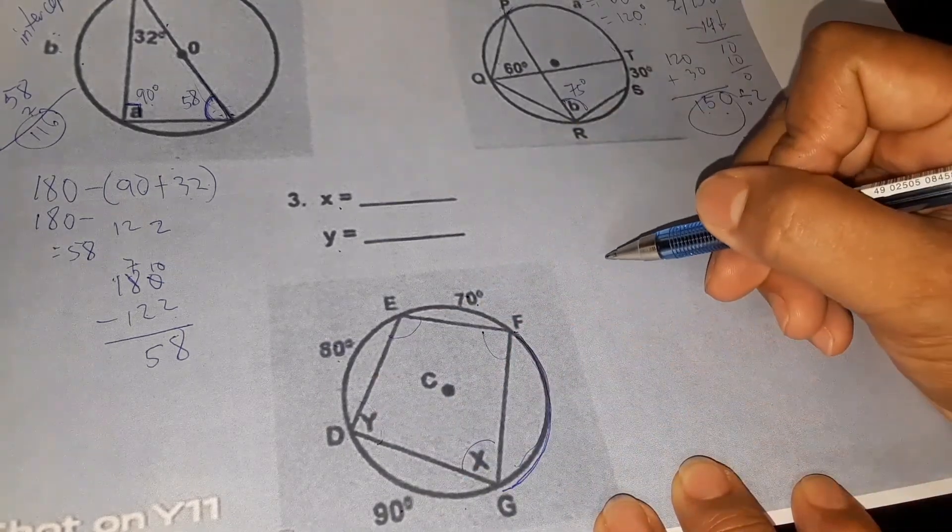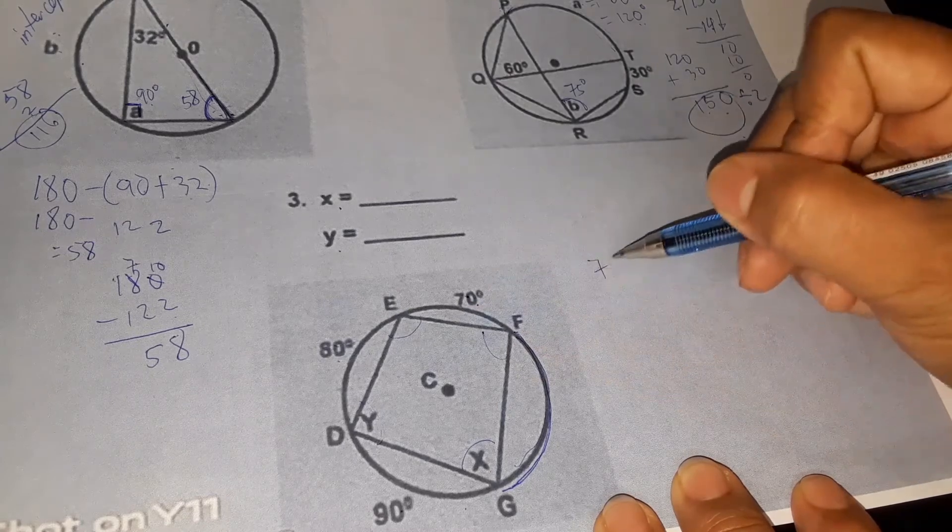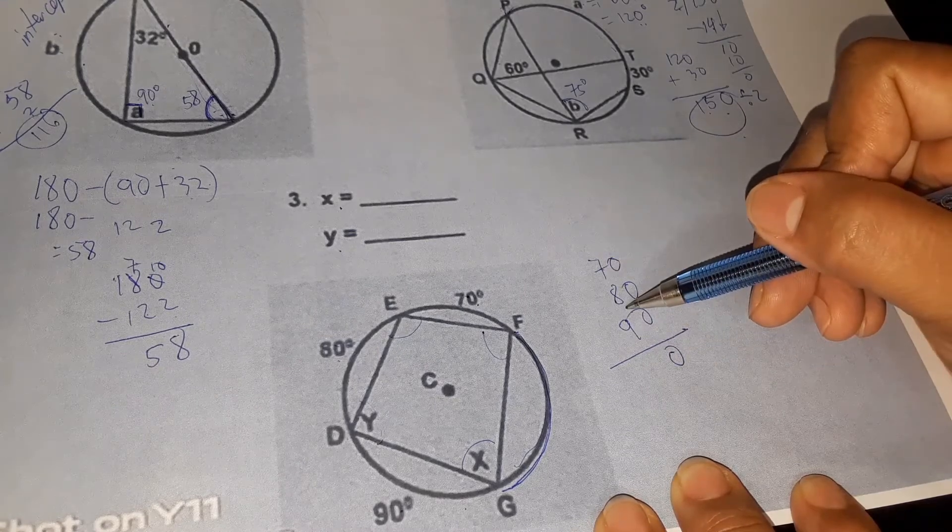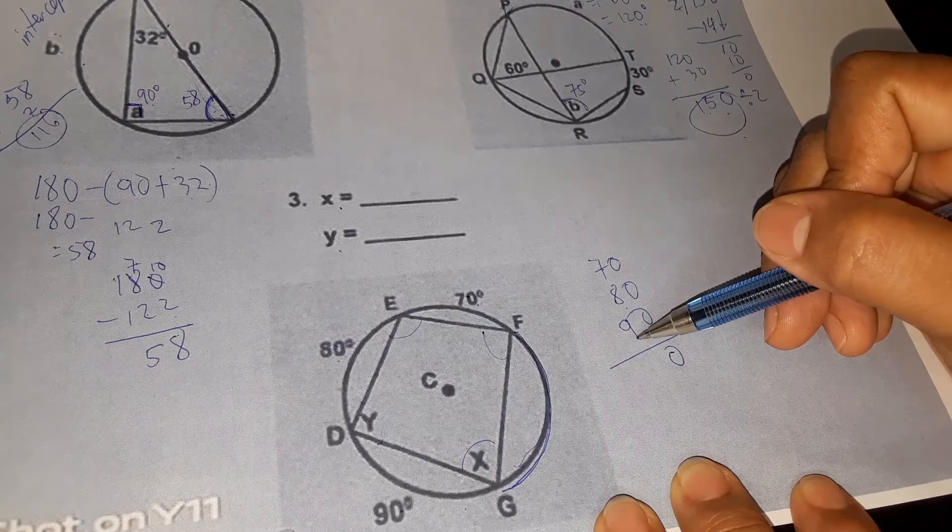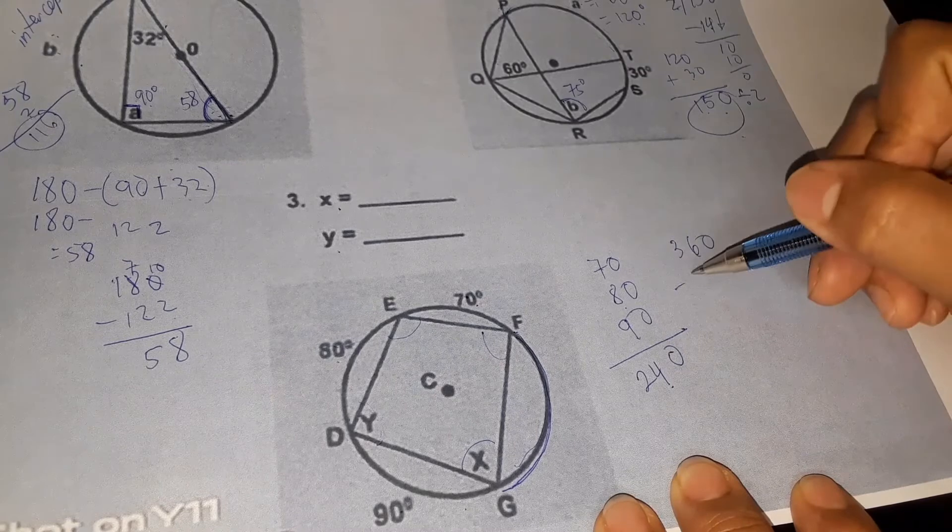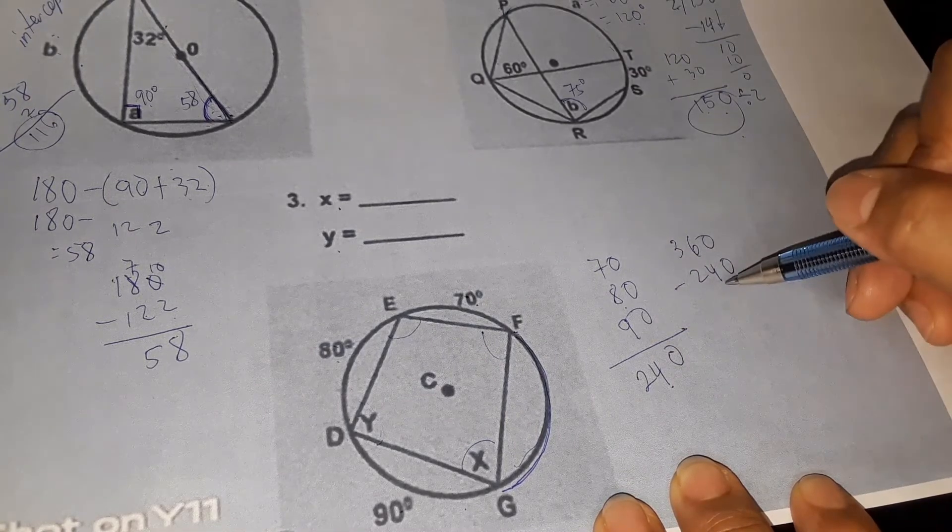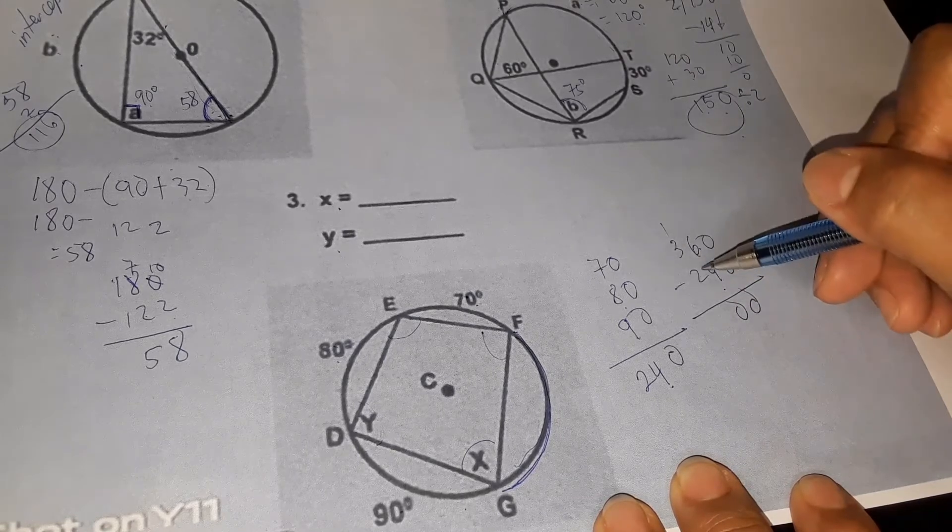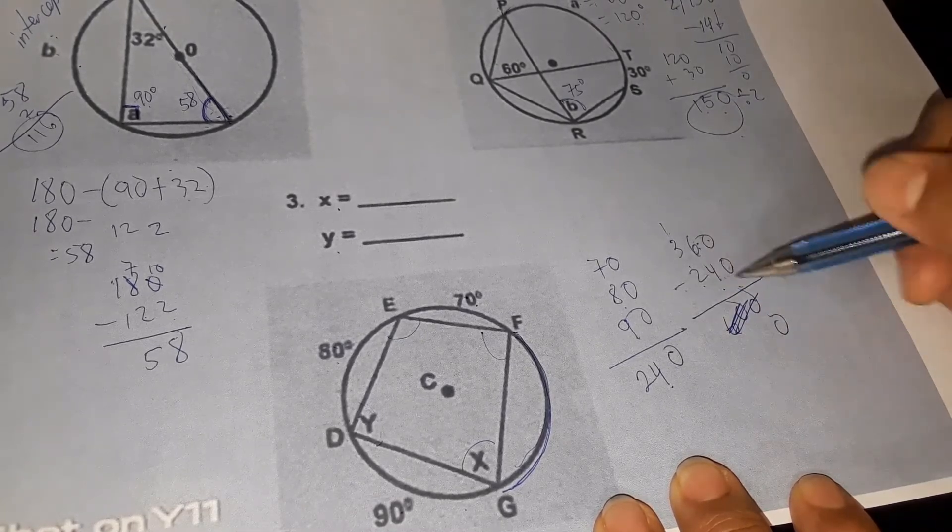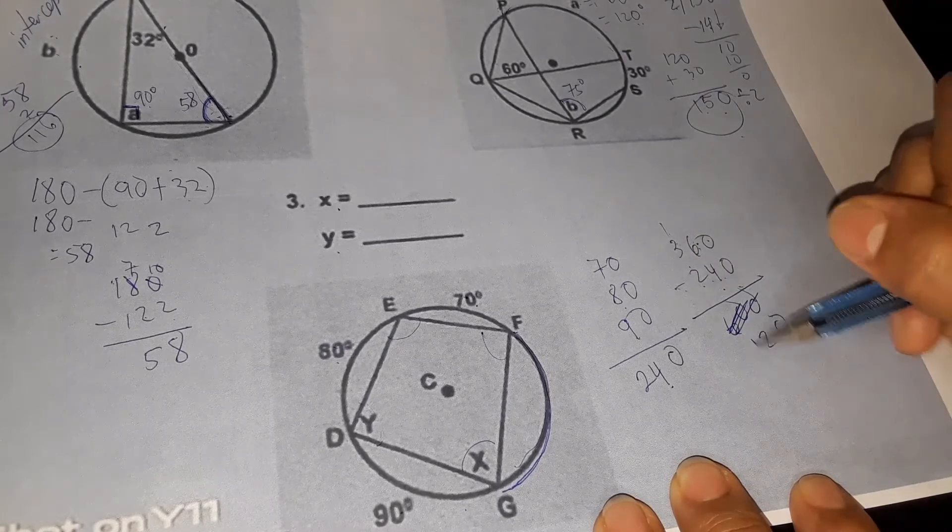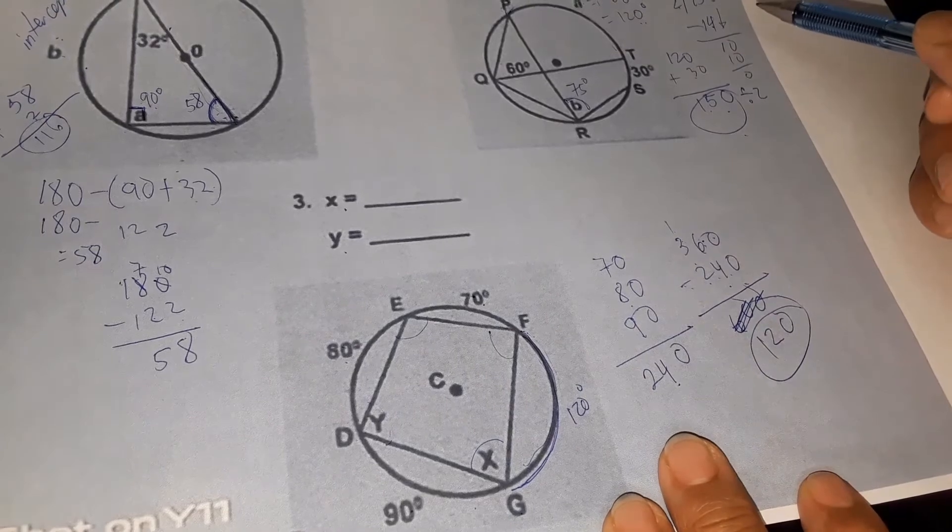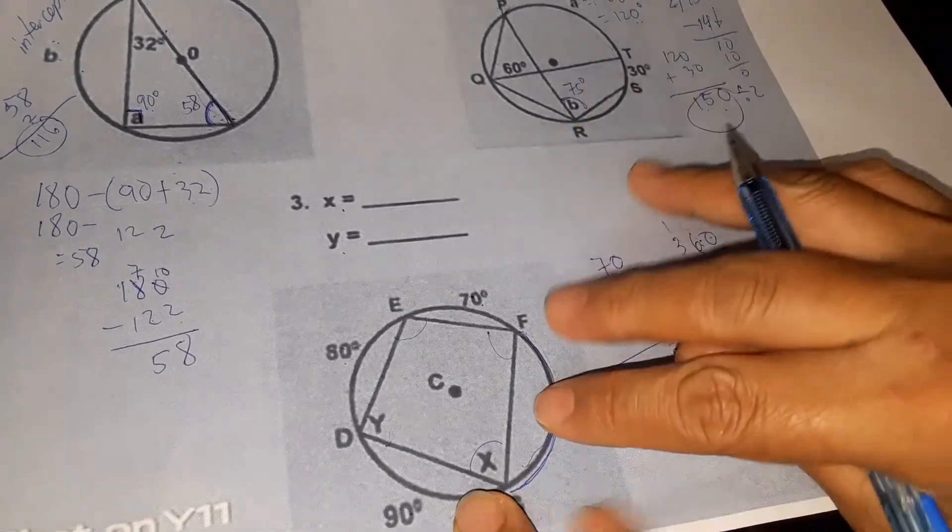How do we get FG? We add all of these and subtract from 360. Why? Because the whole circle is 360. Let's add the given: 70 plus 80 plus 90 is 0, 7 plus 8 is 15, plus 9 is 24. So we have 240. So 360 minus 240, 0 minus 0, 6 minus 4 equals 2, 3 minus 2 equals 1. So we have 120. So FG is 120 degrees.